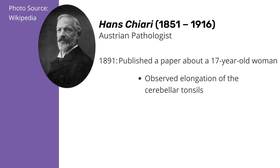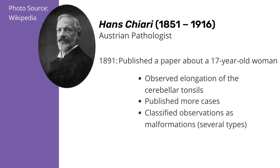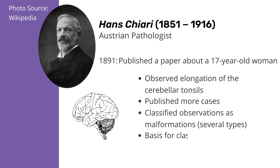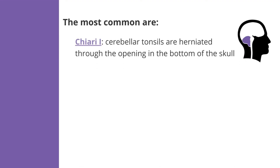an elongation of the cerebellar tonsils. Later, he published on more cases and classified his observations of the malformations into several types, which serve as the basis for the classic definition of Chiari. The most common are Chiari 1, where the cerebellar tonsils are herniated through the opening in the bottom of the skull. Chiari 1 is the focus of this course.